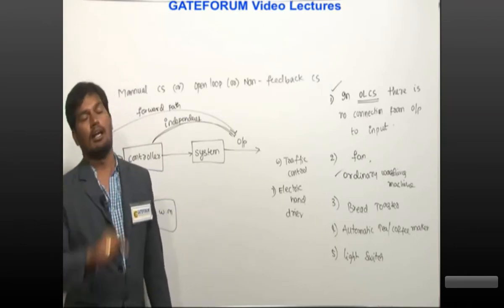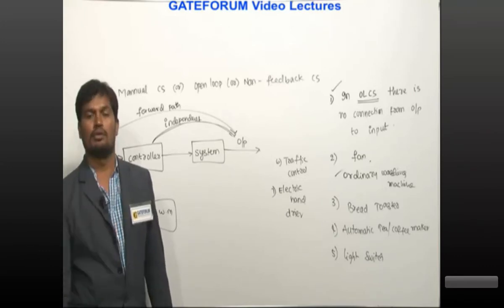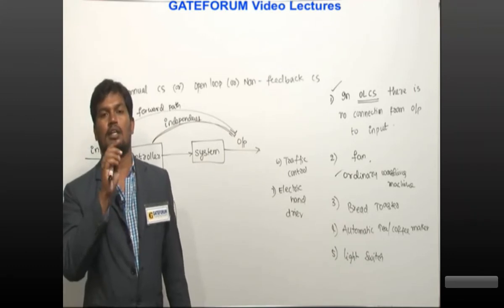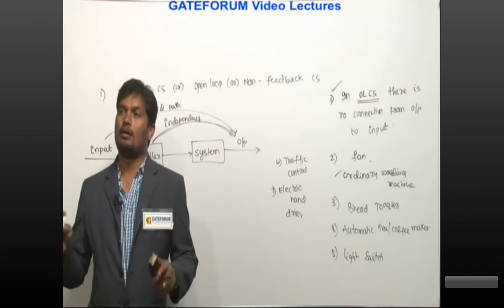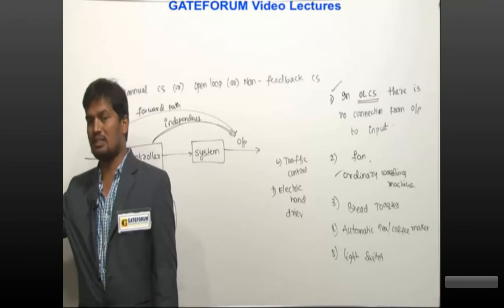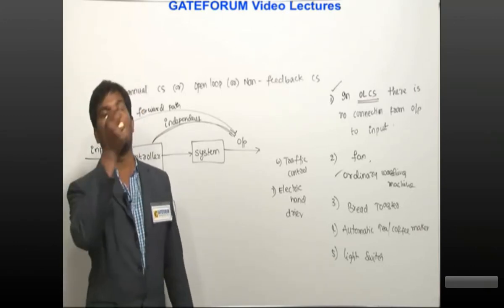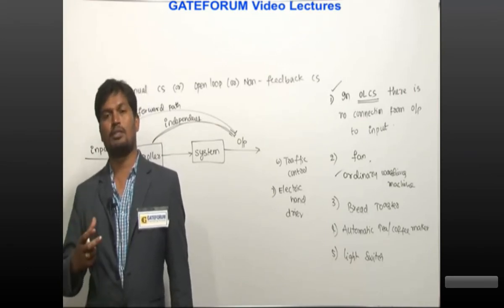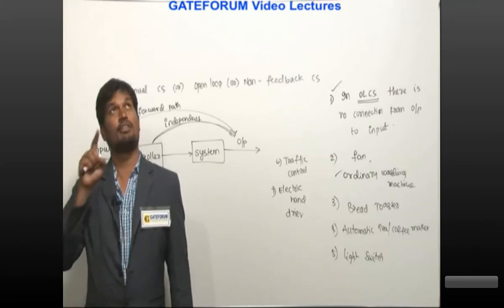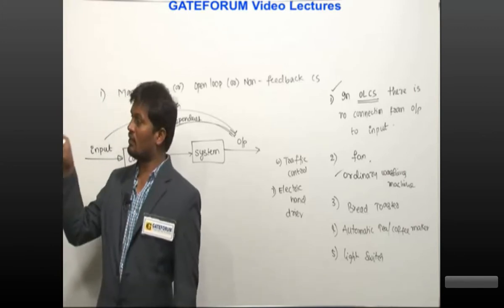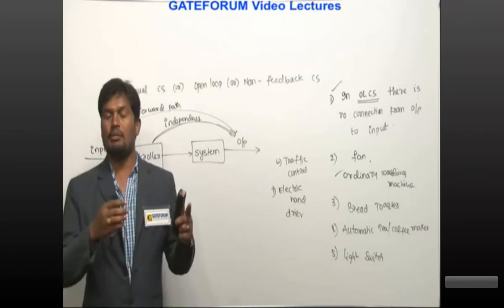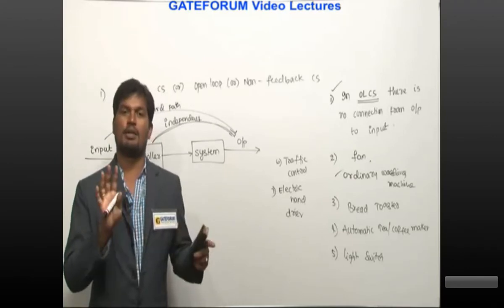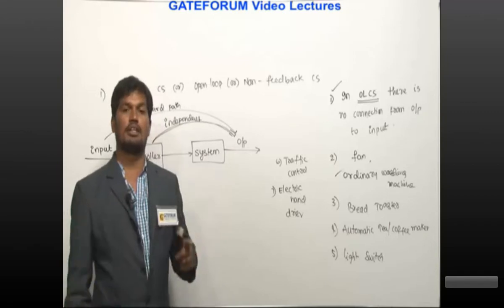Next, light switch: the lamp glows whenever the light switch is on, irrespective of whether light is required or not. After 7 pm in darkness, light is required and the lamp glows — that is fine. But even during daytime when there is already sunlight, if you switch on the tube light the lamp will glow anyway. The lamp does not understand whether light is required or not — during daytime and nighttime it glows regardless of sunshine. There is no sensor, that is why it is an open loop system.